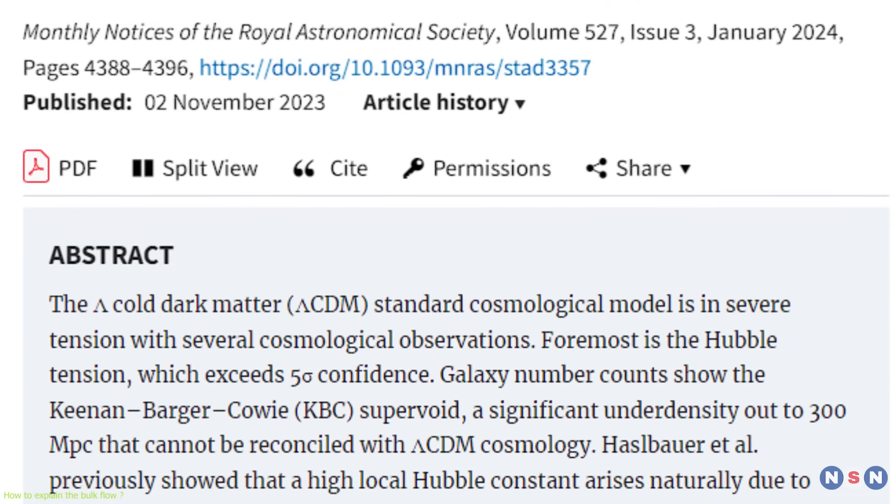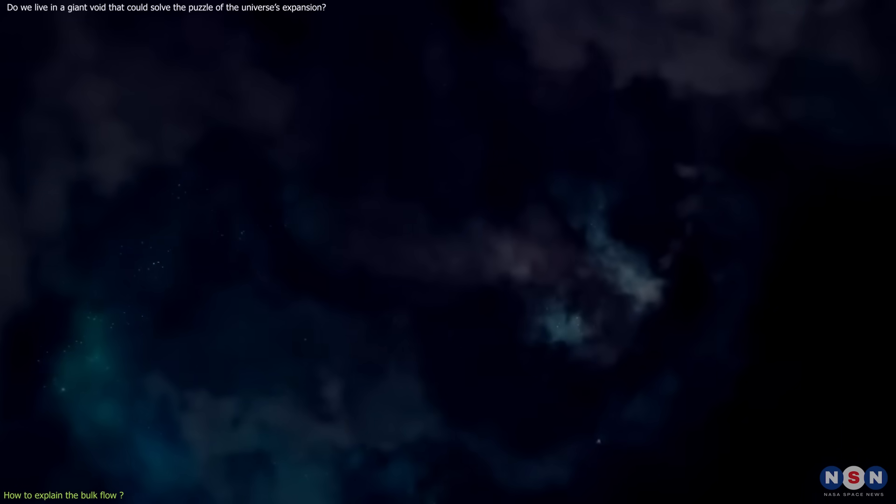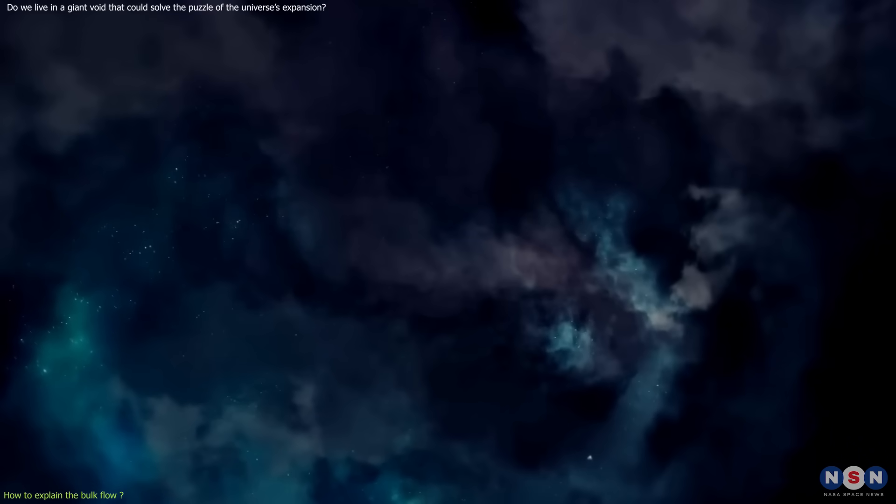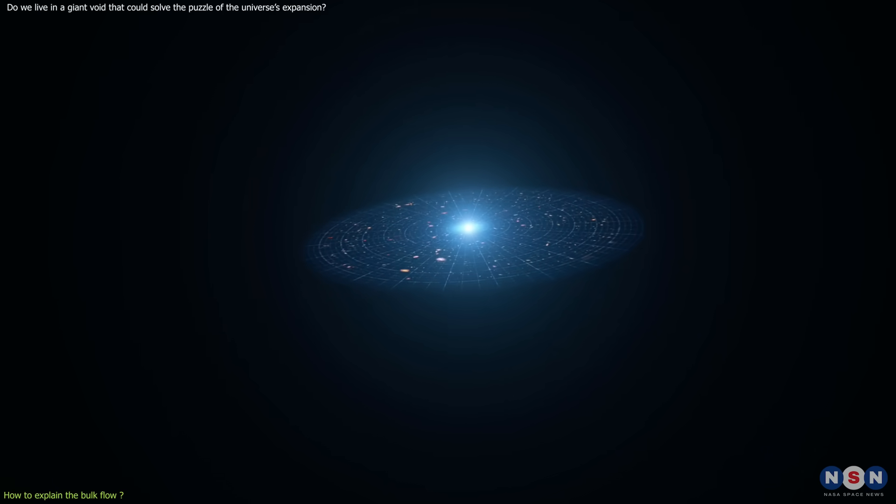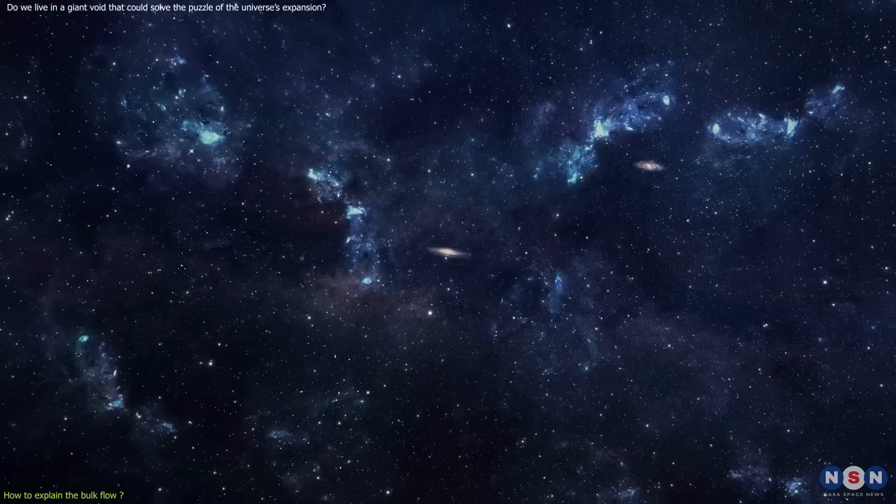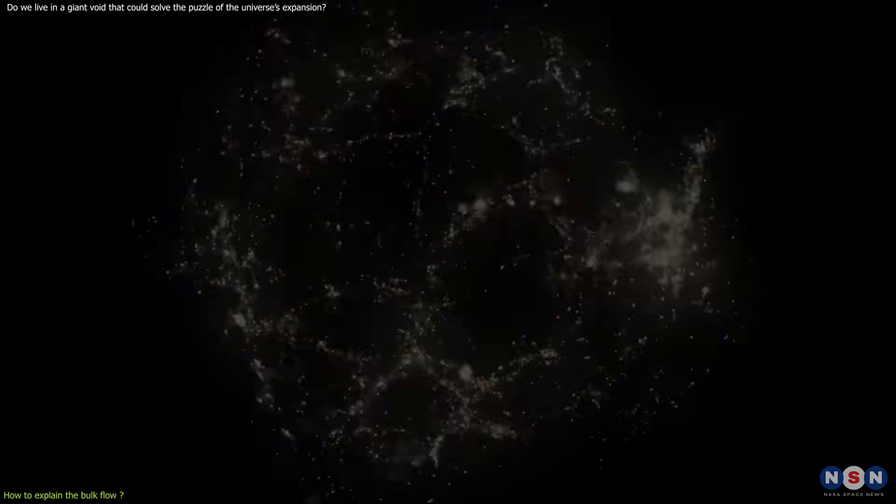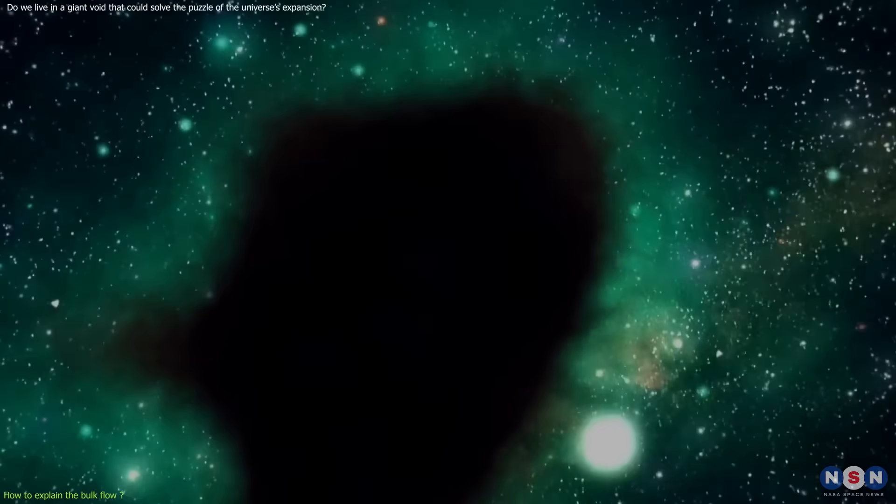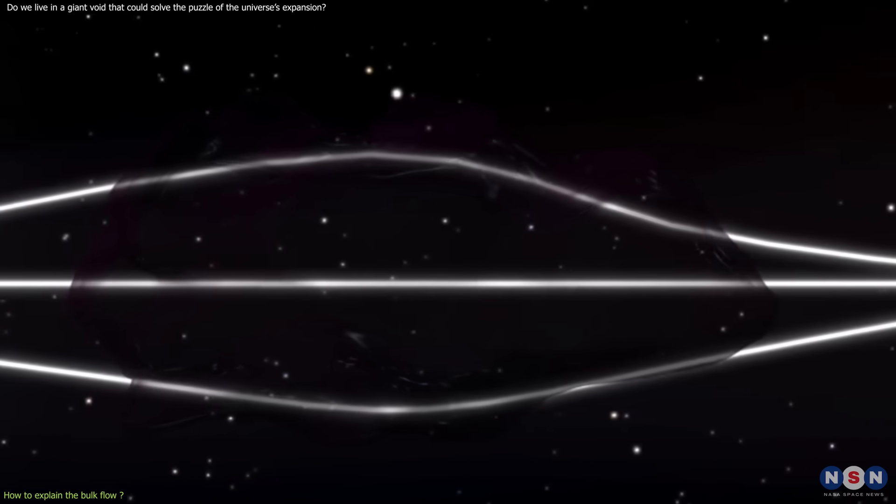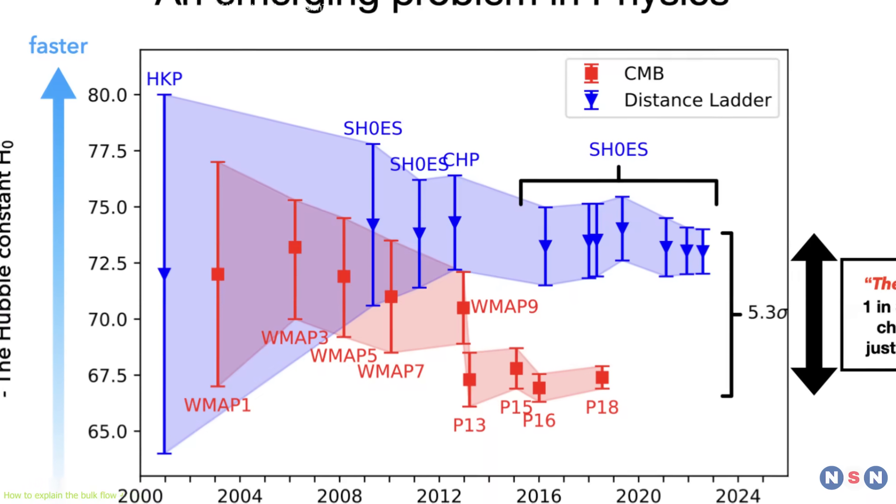However, according to the paper, the local void is not a perfect vacuum, but it is a region where the density of matter is about 20% lower than the average density of the universe. This may not seem like a big difference, but it has a significant effect on the expansion rate and the gravitational potential of the local universe, which is faster inside the void because there is less matter to slow it down. The gravitational potential is lower inside the void because there is less mass to bend the spacetime. These effects can explain the bulk flow as well as the Hubble tension.